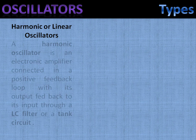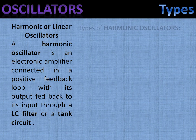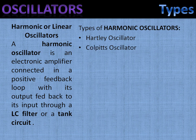A harmonic oscillator is an electronic amplifier connected in a positive feedback loop with its output fed back to its input through an LC tank circuit. Some of the harmonic oscillators are mentioned here like Hartley oscillator, Colpitts oscillator, Clapp oscillator, delay line, crystal, phase shift oscillator, RC oscillator, and cross-coupled LC oscillator.